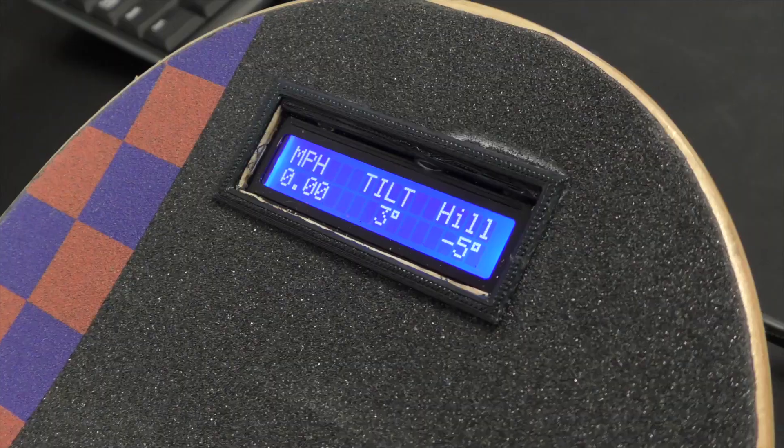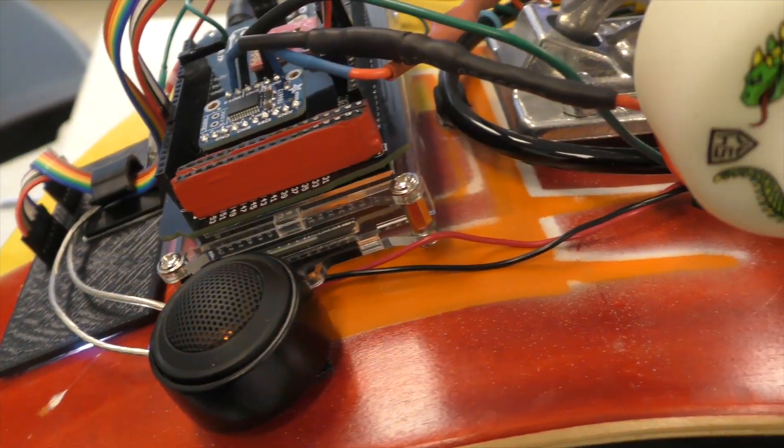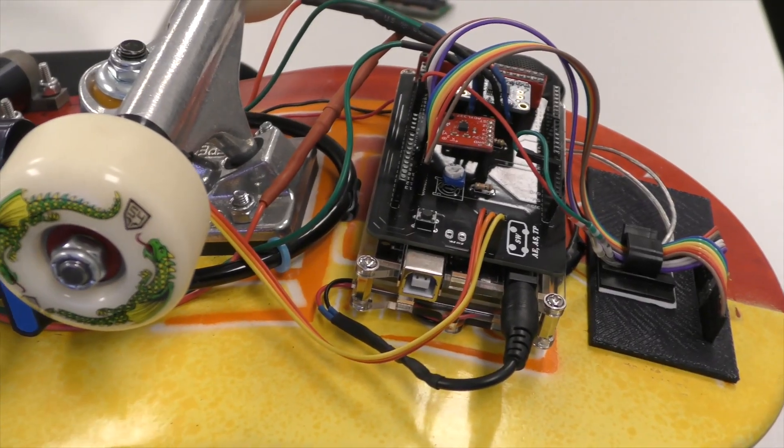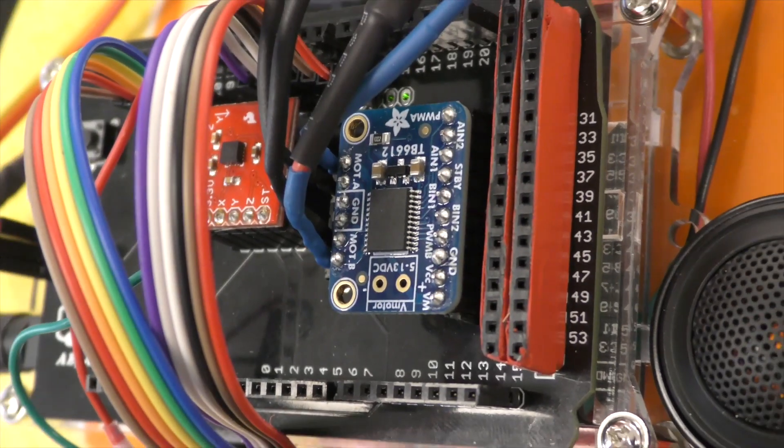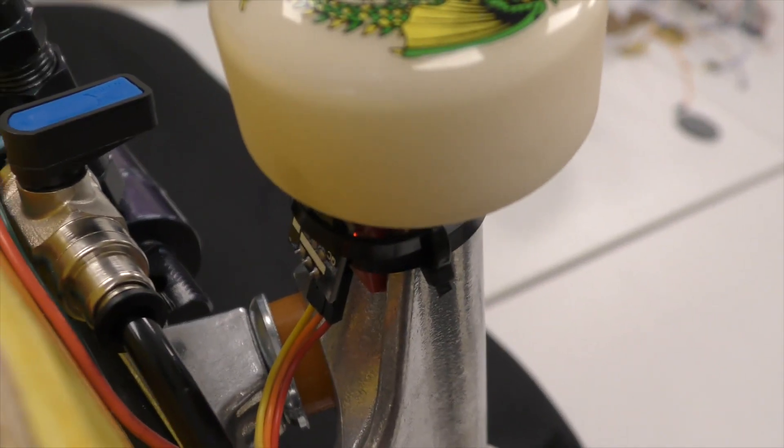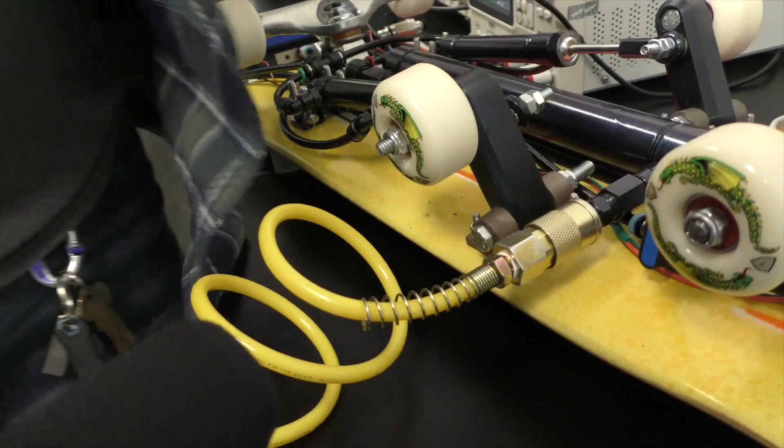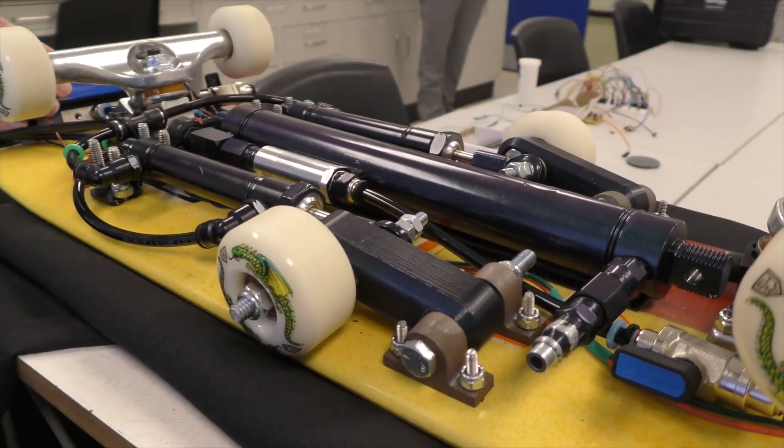We have the electrical system and the pneumatic system. They consist of the microcontroller, a PCB, and an LCD. Those are the primary components of our electrical system. And then the primary components of our pneumatic system are the air tank, the pneumatic pistons, and a pressure regulator.